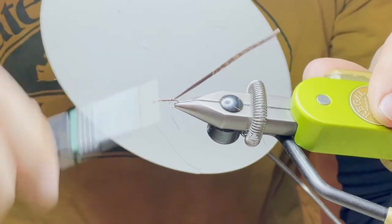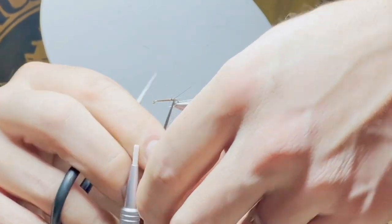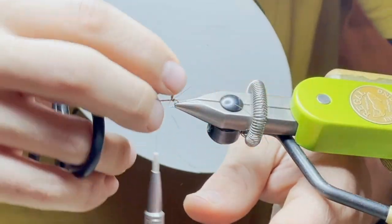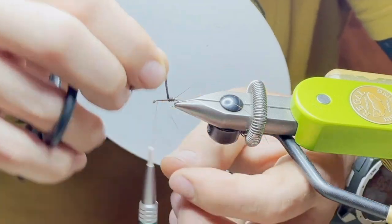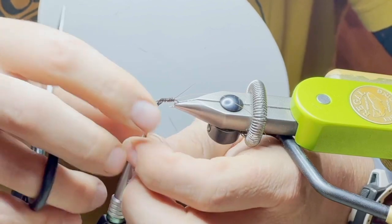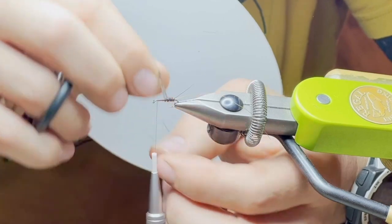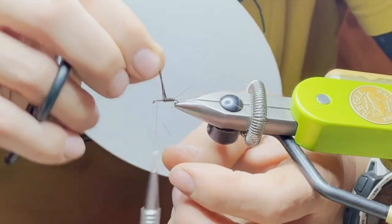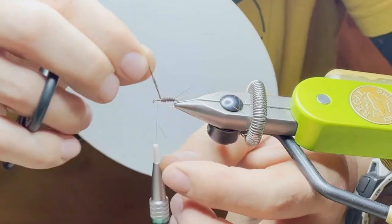I'm going to build just a little base with the thread to make sure that we get a taper, and then the natural taper of the turkey will take care of the rest. Wrapping away from you. A lot of times I'll dub this on the thread, but I do like the body since it is a spinner to be as even as possible.